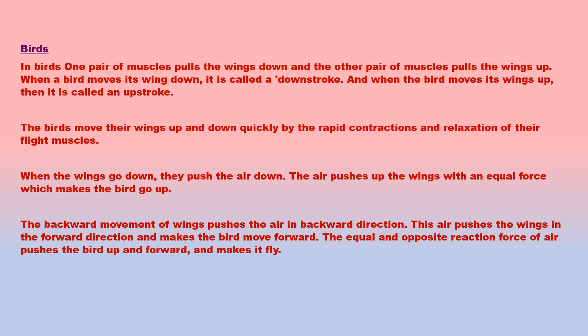Birds can fly because their bodies are adapted for this purpose. Their forelimbs are modified to form wings, their flight feathers provide a large flat surface that is light but strong, their bones are hollow and light, their bodies are streamlined and extremely light, and they have powerful flight muscles. One pair of muscles pulls the wings down and another pulls them up. Birds move their wings up and down quickly by rapid contractions and relaxation of their flight muscles.